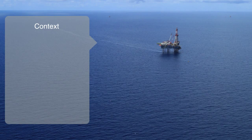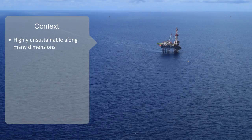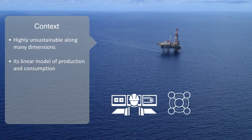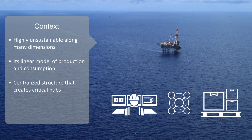Due to a number of features of the industrial age model of design and technology development, our industrial infrastructure has evolved to become highly unsustainable, and along many dimensions we might say fragile. Key factors that have contributed to this are its linear model of take, make and dispose, that requires a high input of resources from the environment; also its centralized structure that creates critical hubs; and its model of batch processing that requires standardization, thus reducing diversity in the system.